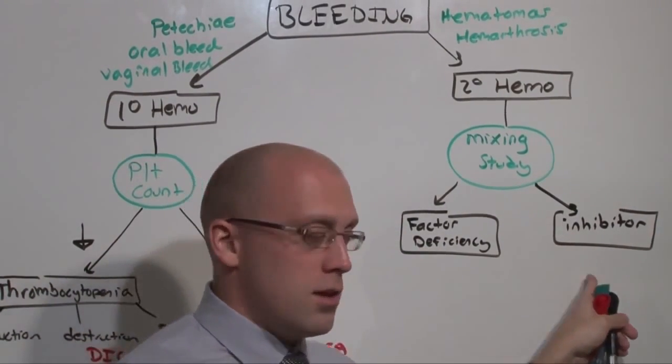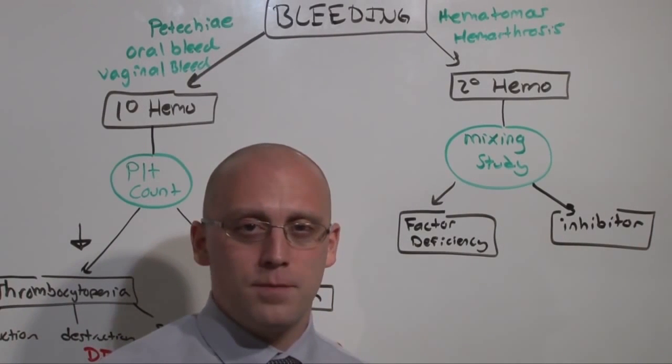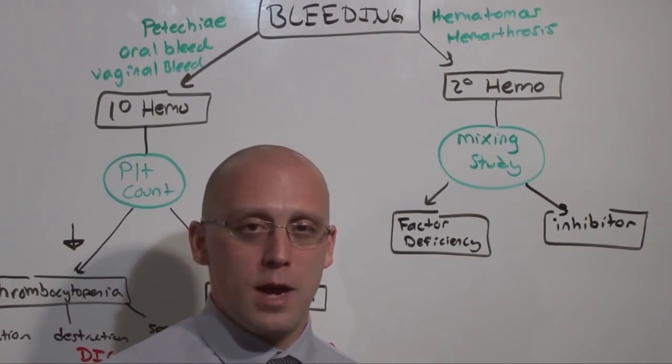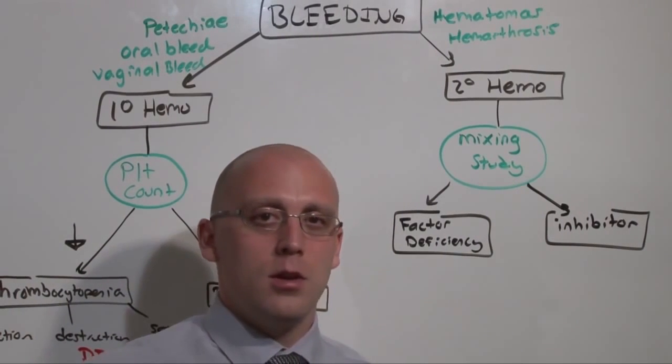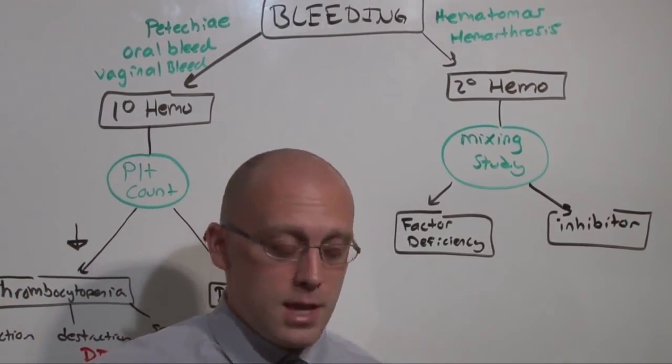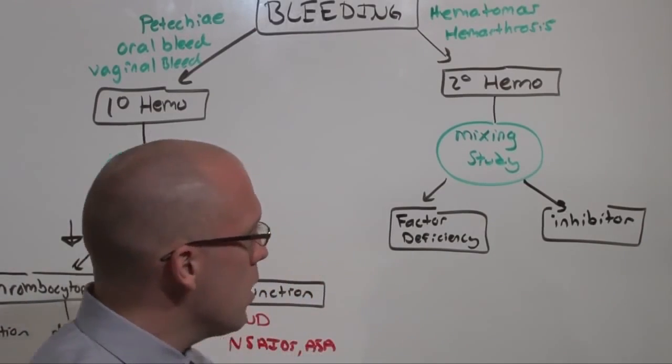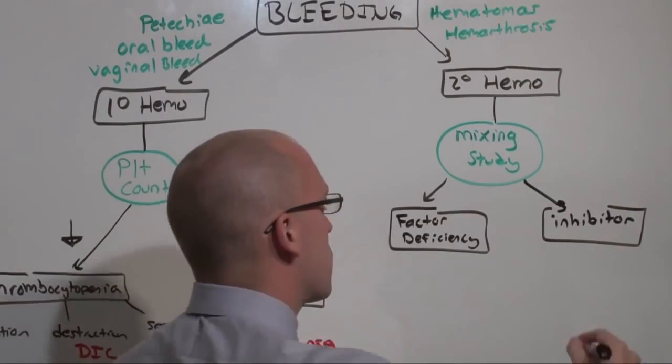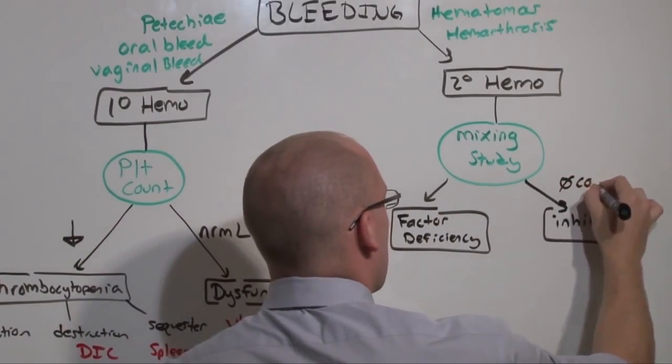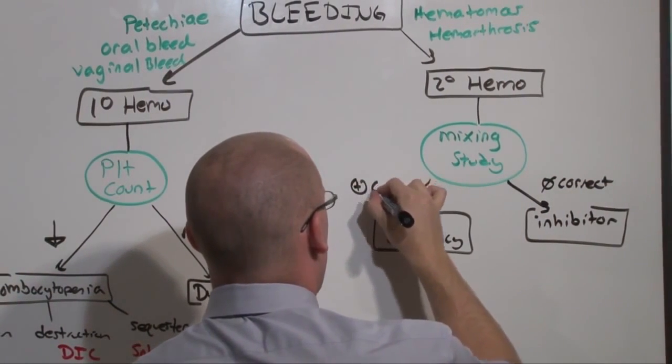If instead, there's an inhibitor, that bad blood has plenty of factors. They've just developed antibodies to the factors, so that when you combine it with good blood, there's more factors, but those inhibitors are still there. That is to say, if there are inhibitors there, the mixing study will not correct. Or if there is factor deficiency, it will correct.